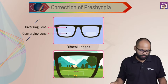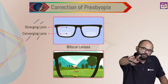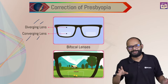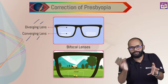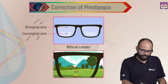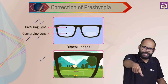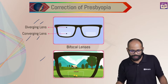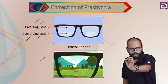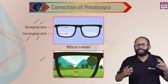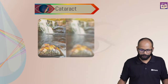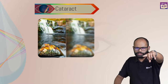Sometimes presbyopia is a combination of both myopia and hypermetropia, which is why bifocal lenses are used — with both a diverging and a converging part. The key differentiator of presbyopia is that it is caused by aging — the muscles weaken with old age, not a change in eyeball shape.